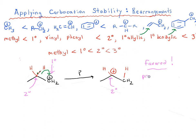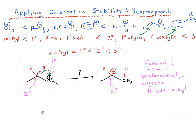It helps to preferentially migrate hydrogen over alkyl in general — a good rule of thumb — because migrating a hydrogen will give you a more substituted carbocation. This secondary carbon becomes a secondary carbocation, and the primary carbocation becomes a primary carbon. So this would be a favored example of a rearrangement reaction.